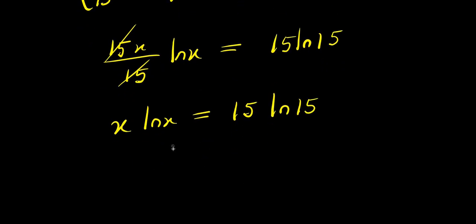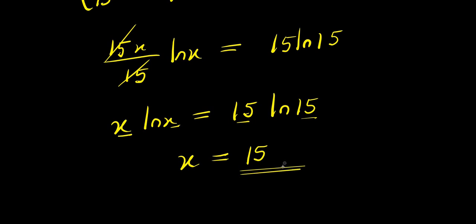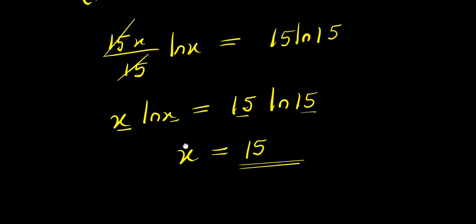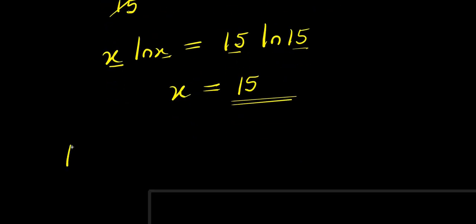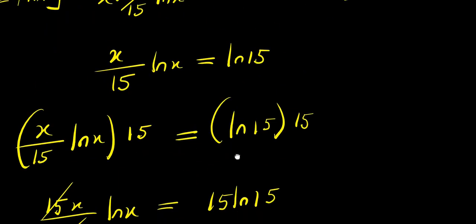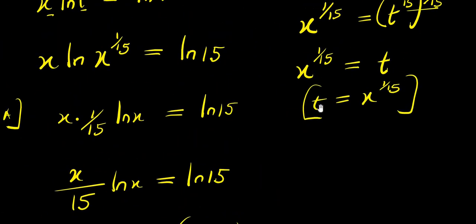So what happens here is that there's x, there's ln x, there's 15, and there's ln 15. We can compare and say that x is 15. If x is 15, we can then solve for T. So let's recall that we said T equals x^(1/15).